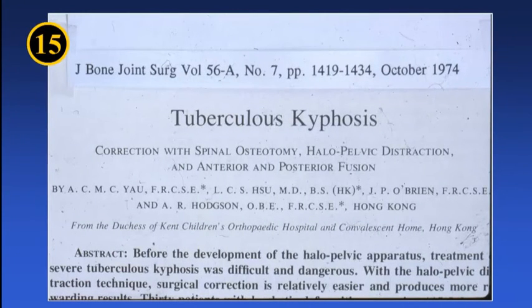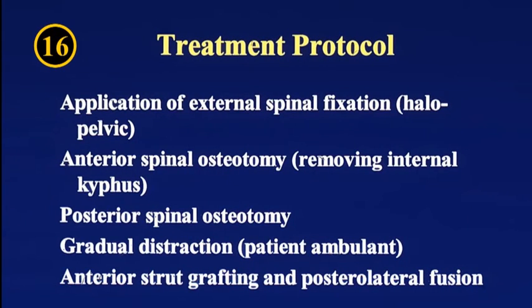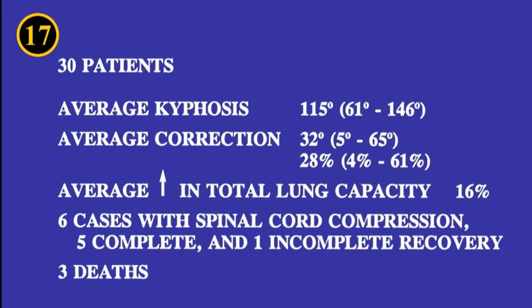Slide 15 is a paper published by the Journal of Bone and Joint Surgery American volume in 1974, reporting on the first batch of such patients treated. The number and sequence of the required five major operations are seen in slide 16. Complications of the cervical spine can develop due to the large amount of force required and the lengthy immobilization during the correction period, as well as damage to the spinal cord, seen in slide 17. These have been recorded in the first paper as mentioned above.